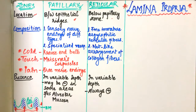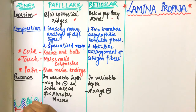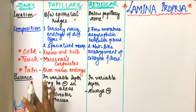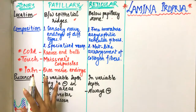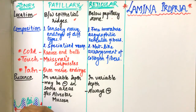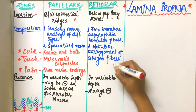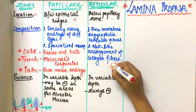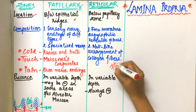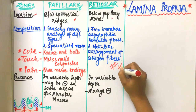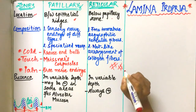In the reticular zone, fine immature argyrophilic reticular fibers are present, and there is a net-like arrangement of the collagen fibers.